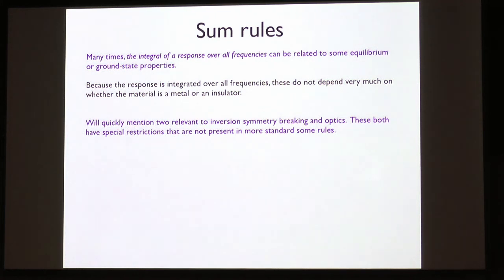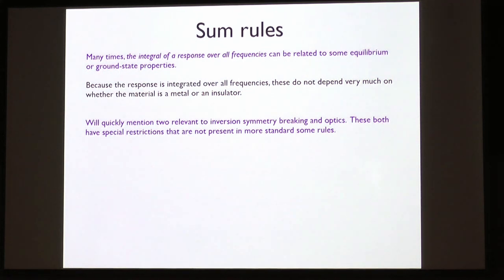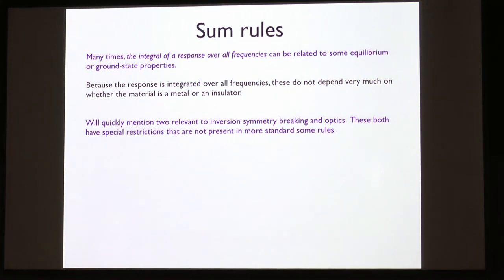I'm going to mention two sum rules. One of them has something to do with why tantalum arsenide has such strong nonlinear optical properties. Basically, it's an extremely polar material — but perhaps polar in a sense we don't always think about, because it's a metal. These two sum rules are not quite as general as some standard sum rules, but they establish useful relationships.